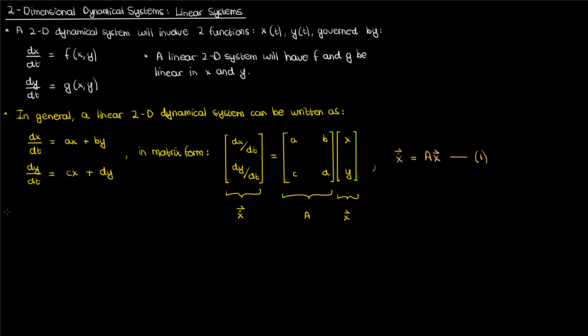Now this linear dynamical system has two properties. The first is that the origin where both x and y are 0 is a fixed point. And you can see this pretty easily. If I plug in x equals 0 and y equals 0 into equation 1,